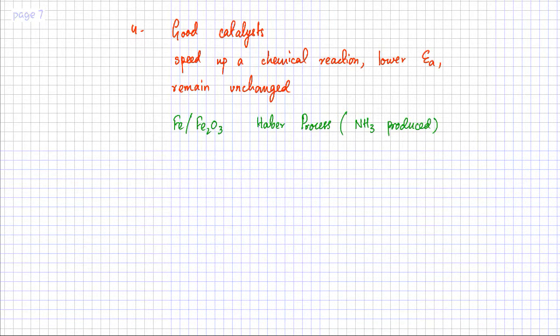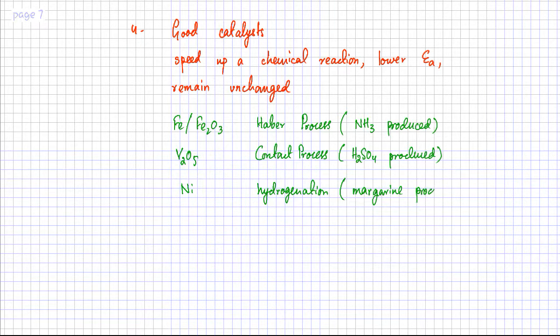Then you have another example of vanadium pentoxide or V2O5. Now, vanadium pentoxide is used in the contact process where sulfuric acid H2SO4 is produced, which is then used for making fertilizers and used in lead acid batteries. Then you have another catalyst which you're going to study in all levels. That's nickel. And that's used in hydrogenation. Or you can call it the manufacture of margarine. So it's used to produce margarine in the chemical industry.